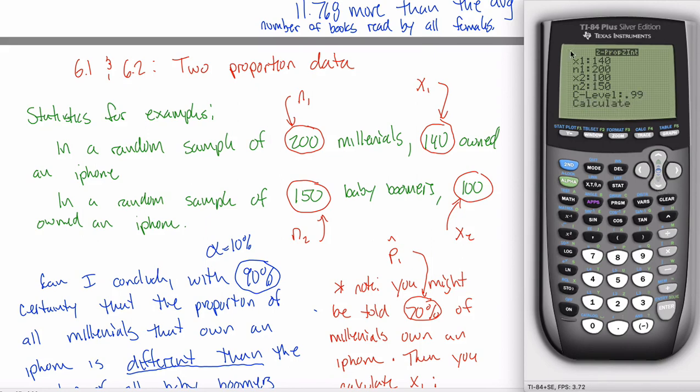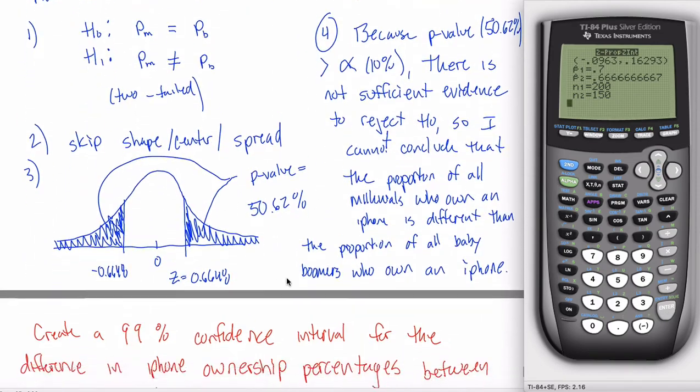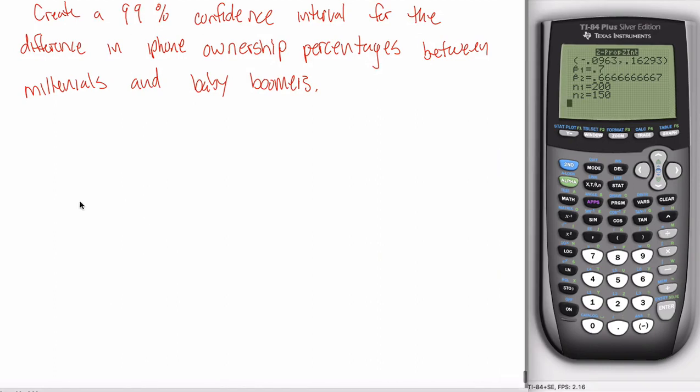But I just want to make note that because the millennials are one, if I see positive numbers in my output, those will correspond to the millennials owning more iPhones. And if I see negative numbers in my output, that'll correspond with millennials owning less iPhones. In other words, baby boomers owning more iPhones. So let's see what happens. There's my confidence interval, so I can sketch this picture.